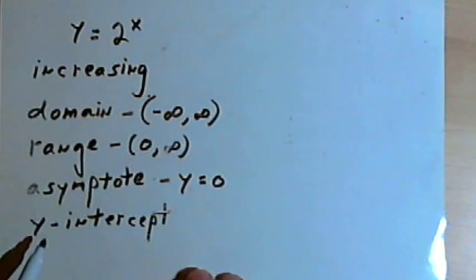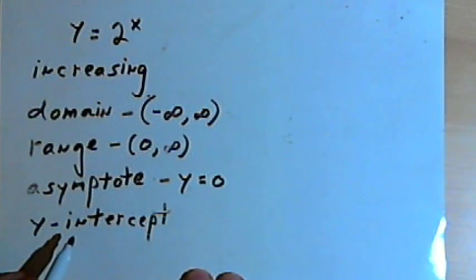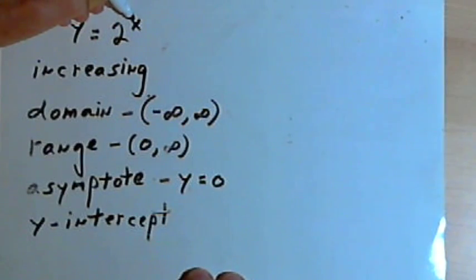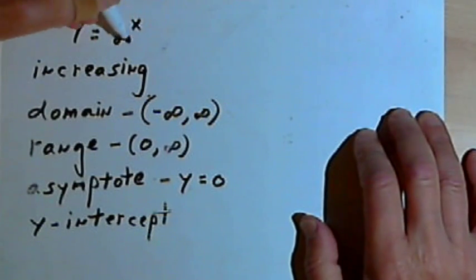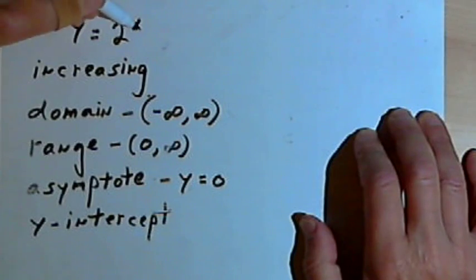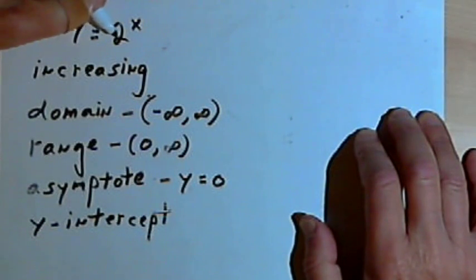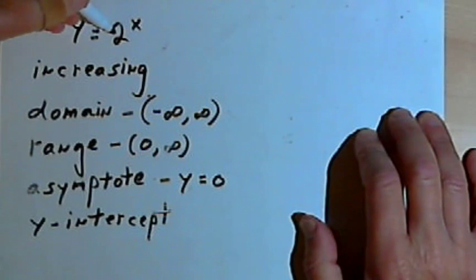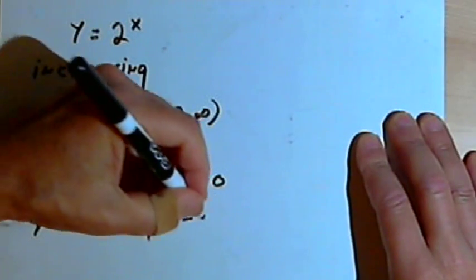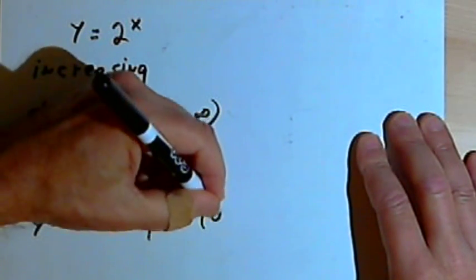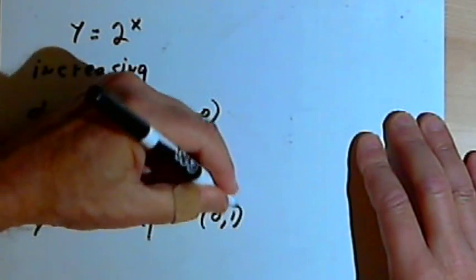We can find the y-intercept by asking ourselves what happens when x equals zero, since the y-intercept happens along the y-axis and that's where x equals zero. So 2 to the zero — or actually any base number to the zero — is going to equal 1. So we're going to have a y-intercept at (0, 1).